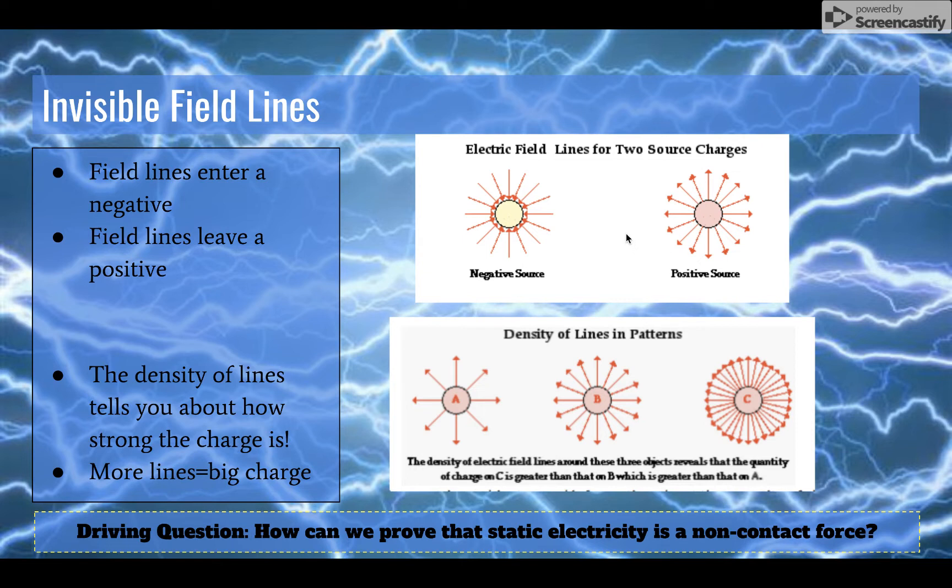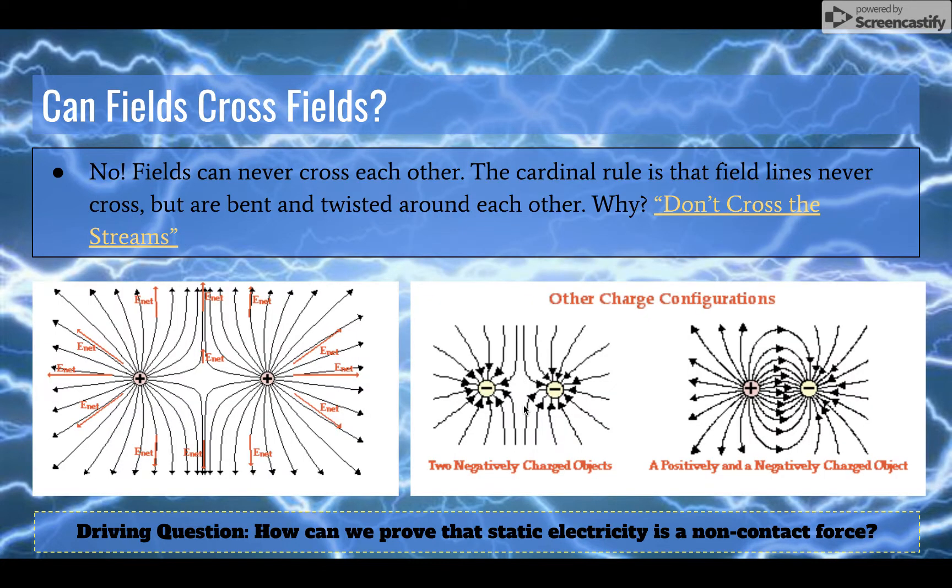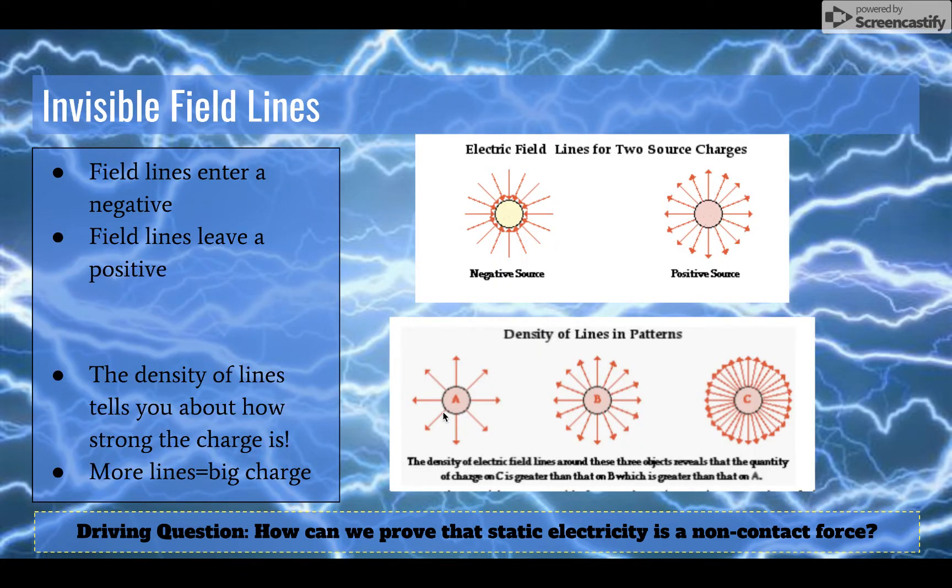Here's some things that you need to know about these invisible field lines. From what we know about these field lines from physics and studies and science is that field lines always leave a positive and enter a negative. So this would help you explain why positives and negatives are attracted - field lines leave a positive and go into a negative.